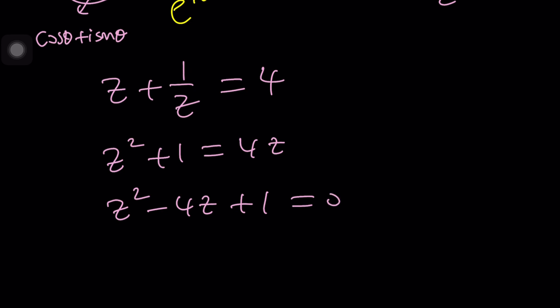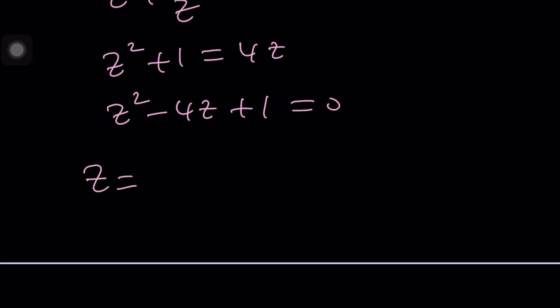And then from here, Z is going to be negative B plus minus the square root of B squared minus 4AC. That's going to be square root of 12 over 2. That'll be 2 plus minus root 3. Awesome. So we got these values, but what are we going to do with them? Z is equal to E to the i theta, remember?